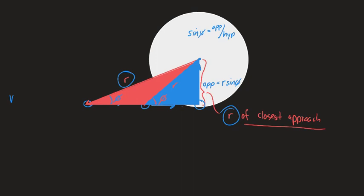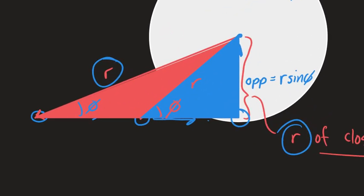Picking up where we left off yesterday, I wanted to remind you that we call this R — the R of Closest Approach. As this guy is running this way, as they get closer, their distance definitely also gets closer. The R is getting smaller but the angle is getting bigger. As they are changing, they keep multiplying to be the same value, and that value is what I call the R of Closest Approach, also known as R Perpendicular.